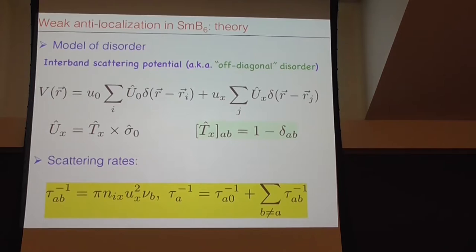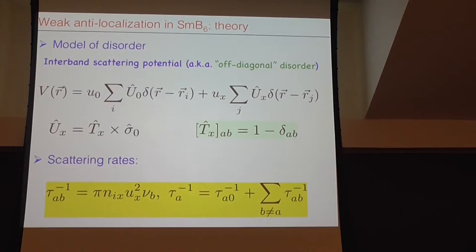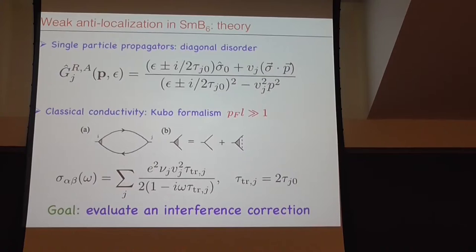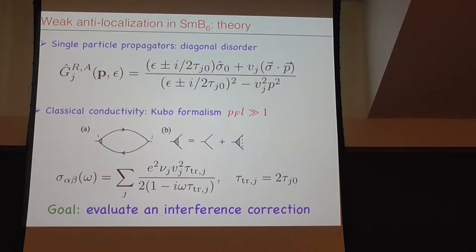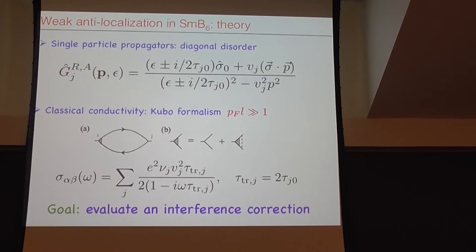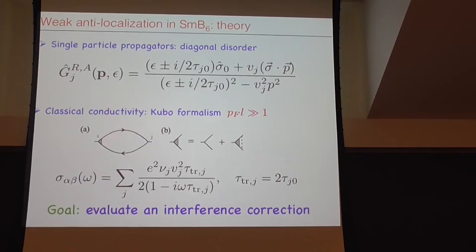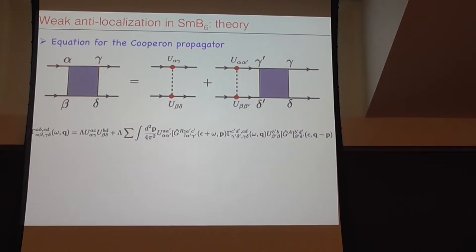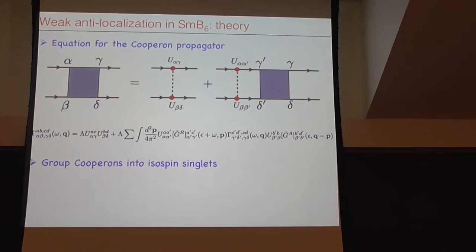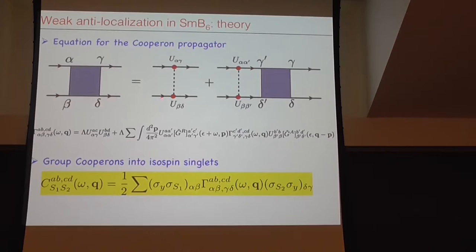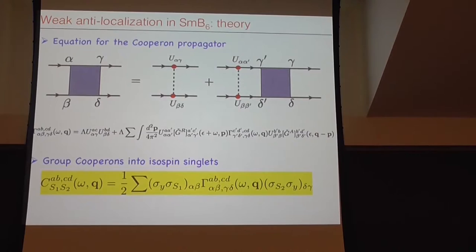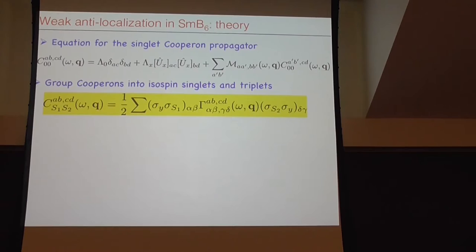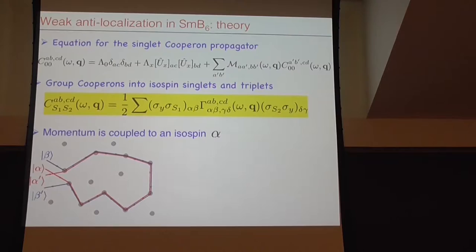Now let me quickly go through the details of how to do the correction to conductivity. We have to introduce disorder. We assume that the main effect of disorder is the intra-band disorder - it scatters electrons on the same pockets on the surface. I have three bands on the surface and introduce disorder on the surface which scatters electrons. My largest timescale is this intra-band scattering, except for tau phi which I'm taking to infinity. Then I have to provide another disorder scattering which scatters electrons between the pockets.